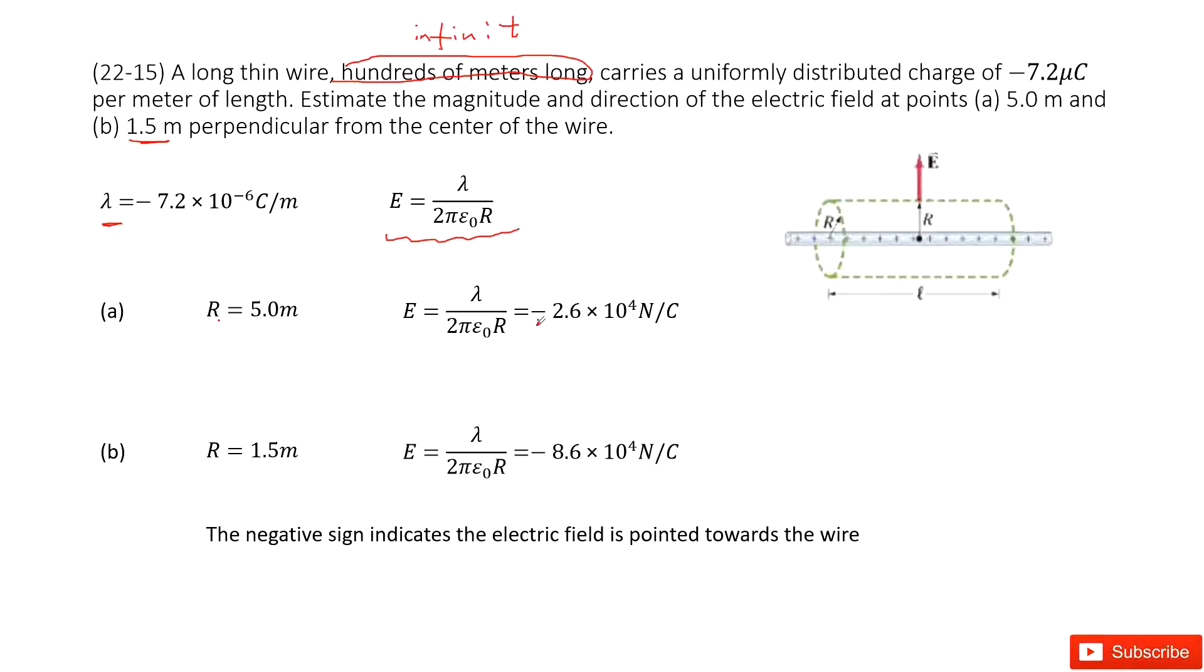This is the negative one. And also, you can see in part b, the R becomes 1.5 meters. The same thing. You still input lambda and R inside, get the answer there.